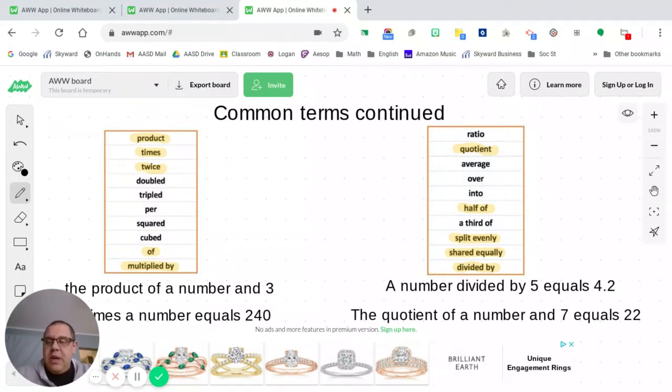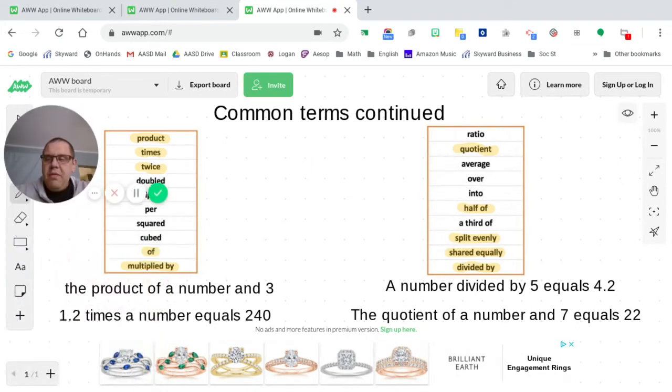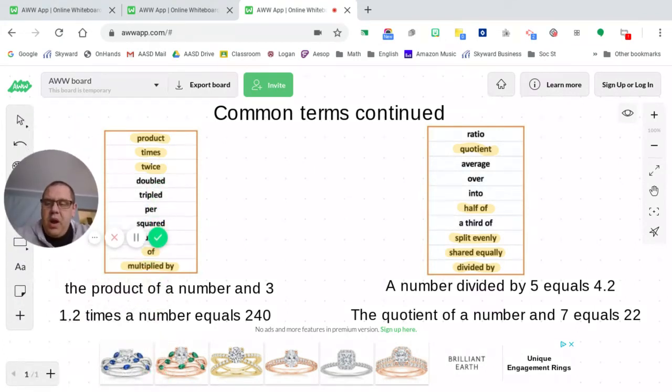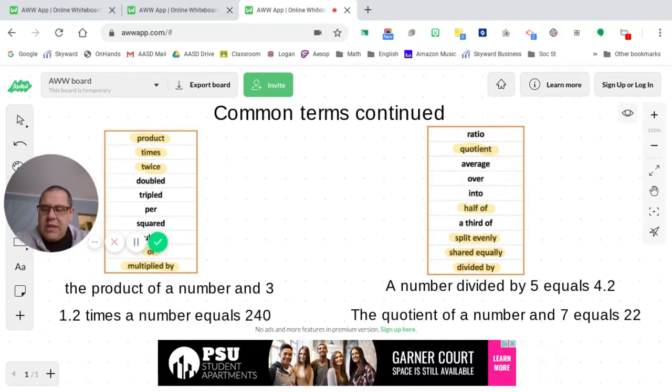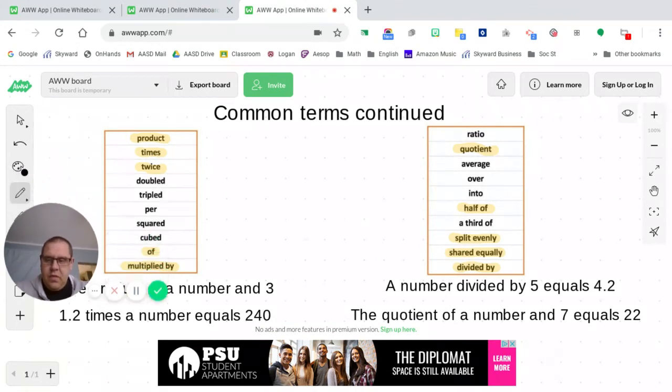So here I have two examples. My first example says the product of a number in three. Product. The answer to a multiplication problem. And then another way to say, use multiplication terms is 1.2, 1 and 2 tenths times a number equals 240. So right there are two good examples to look at.